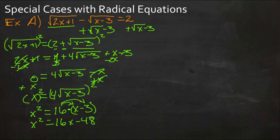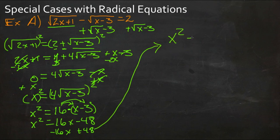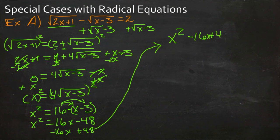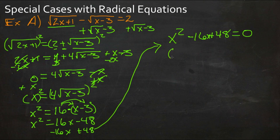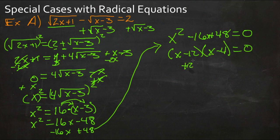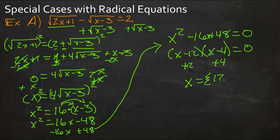Now we have a quadratic equation, so we put everything on one side. Subtracting 16x and adding 48 to both sides gives us x squared minus 16x plus 48 equals 0. We can factor this trinomial: 48 is 12 times 4, and 12 plus 4 equals 16, so with negative 12 and negative 4 we get x minus 12 times x minus 4 equals 0. That means x equals 12 or x equals 4 are our two solutions.